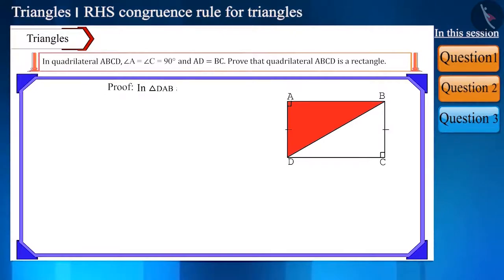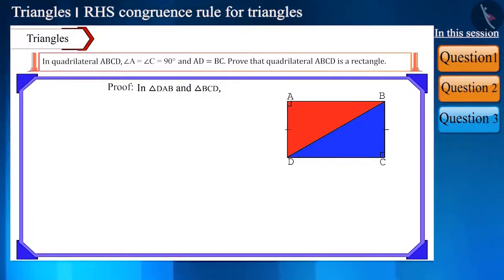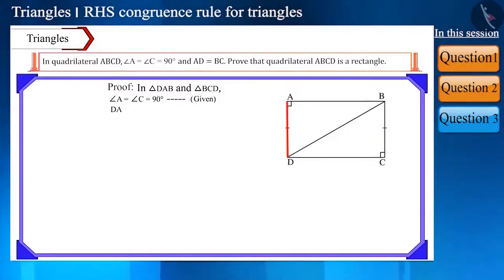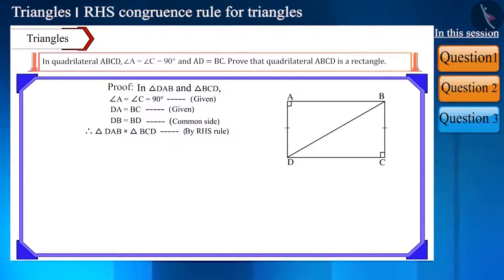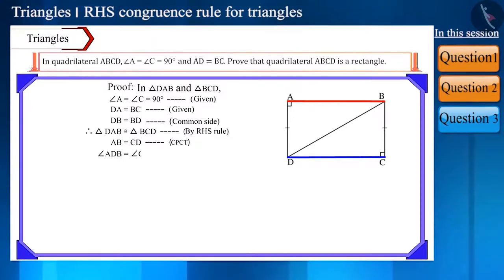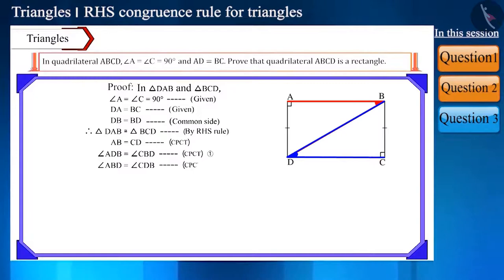In triangle DAB and triangle BCD, angle A is equal to angle C, side AD is equal to side BC, and side DB is the common side. Therefore, by the RHS congruence rule, these two triangles are congruent, and their corresponding parts and corresponding angles are also equal. This means side AB is equal to side CD, angle ADB is equal to angle CBD, and angle ABD is equal to angle CDB.